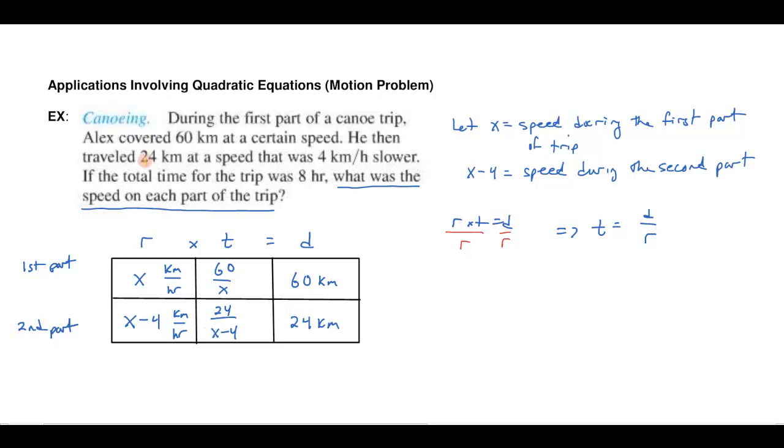And what I know is that the total time for the trip was eight hours. So if I add those together, that gives me the total time. Now when I write out this equation, I get 60 over x. You want to think of that 60 over x, not just as an abstract algebraic expression. You want to think of that as the time for the first part of the trip. And if I add to that the time for the second part of the trip, I know that that has to equal the total time.